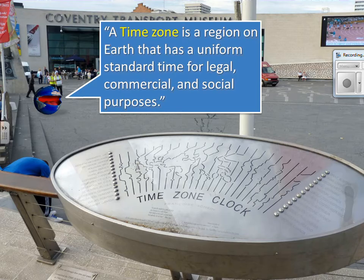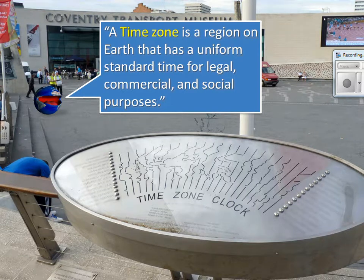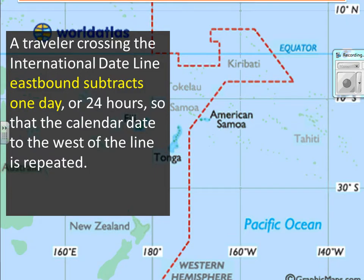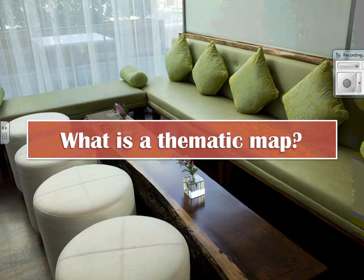Time zones are used for business, government, and social purposes — they give a standard time so you know your time zone versus where you may be communicating with someone in another time zone. The international date line is an imaginary line that demarcates where one calendar date ends and the next day begins on the other side. A traveler crossing the international date line eastbound subtracts one day or 24 hours so that the calendar date to the west is repeated.